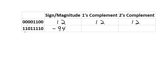In the 1's complement system, we know it's a negative number, and to find the magnitude we perform the 1's complement operation — flipping all the bits — to get 00100001, which equals 33. So in the 1's complement system, that number is equal to negative 33.